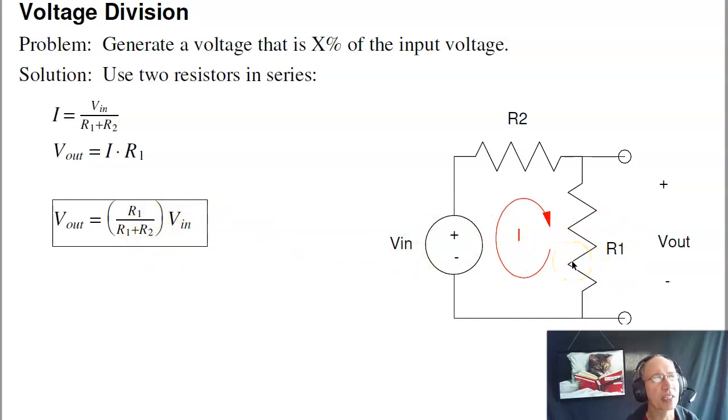A lot of times people kind of get the order backwards. Think of it this way. Suppose R1 is zero ohms. If R1 is zero ohms, I should get zero volts out, because I times R, anything times zero is zero. If R1 is the numerator, and R1 is zero, I'm going to get zero. So it's what you're measuring divided by the total. That's Voltage Division.